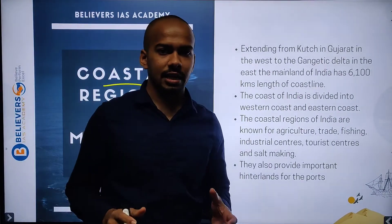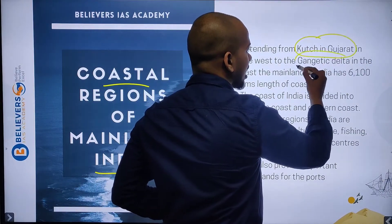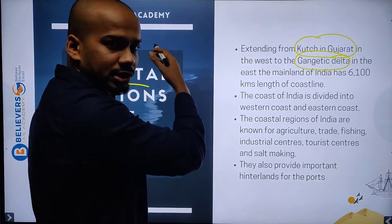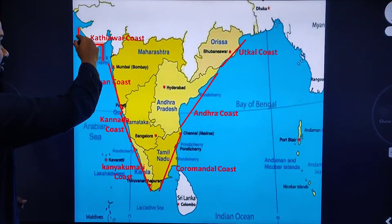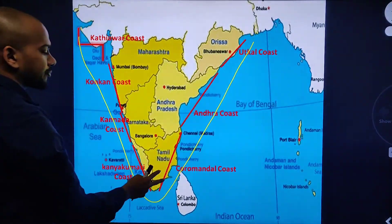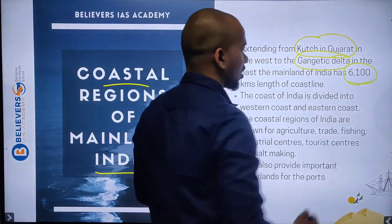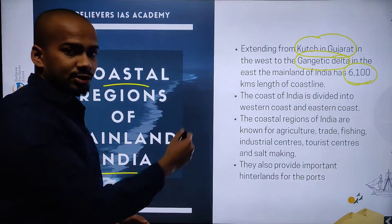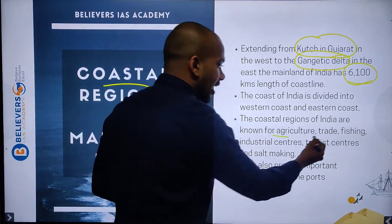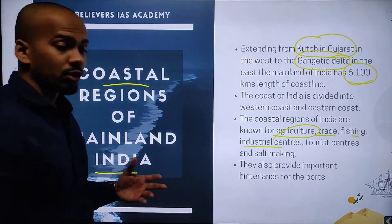The coastal region in India is actually extending from the Kutch in Gujarat to the Gangetic Delta in the eastern side. In the western side, you have Kutch in Gujarat starting from there, going until Kanyakumari and up to the Gangetic Delta. It covers around 6100 km length of coastline. The coast of India is divided into western coast and eastern coast, and the coastal region is known for agriculture, trade, fishing, industrial centres, tourist centres, and also salt making.